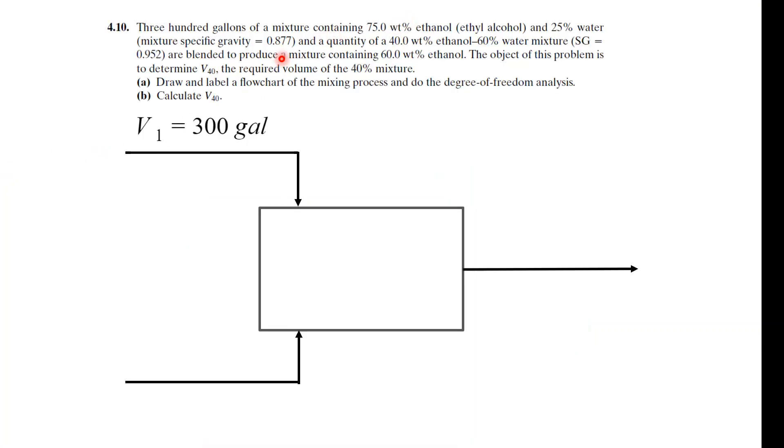So, first thing I like to do is just describe, okay, we have 300 gallons of the mixture coming in. Did you read the problem first of all? Read the problem by yourself. Then we have, let's see, we can fill out some more things, so this is 75% by weight ethanol, 25% weight by water, and the specific gravity is given, 0.877.